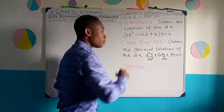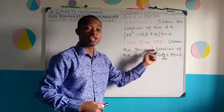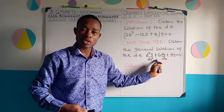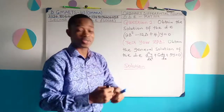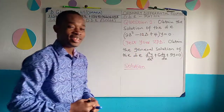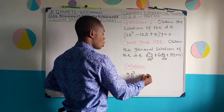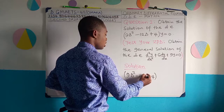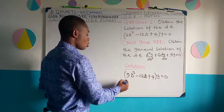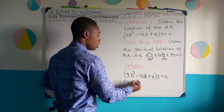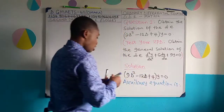At the end of my solving this problem, please test your zone of proximal development by obtaining the general solution of this homogeneous SODI: d²y/dx² + 6 dy/dx + 9y = 0. Now let us solve together. We're given (9D² - 12D + 4)y = 0. As usual, we bring out the auxiliary equation for this homogeneous SODI.